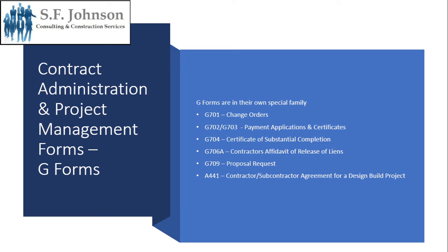There are also forms within AIA documents that assist in the administration and management of the project — specifically the G forms, which are their own special family. Key G forms include: G701, change orders; G702 and G703, payment applications and certificates; G704, certificate of substantial completion; G706A, contractor's affidavit of release of liens; and G709, proposal requests.